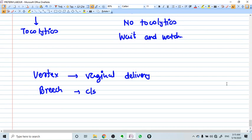The mode of delivery is, if the vertex presentation is there and everything is okay, then vaginal delivery. But if breech is there or any other malposition, malformation, then you can go for caesarean section. Thank you.